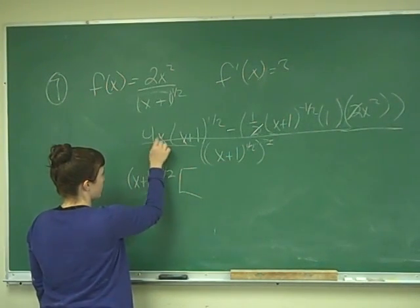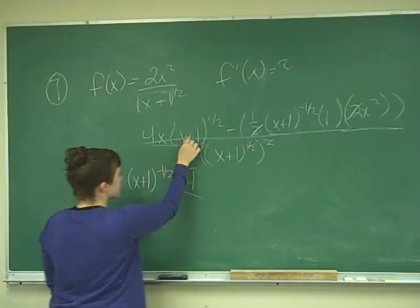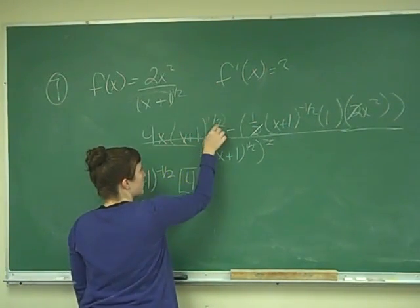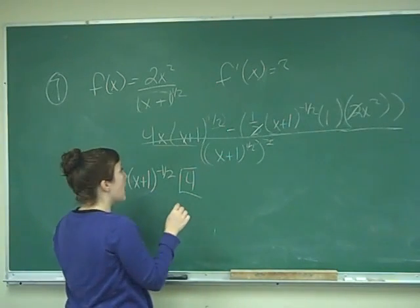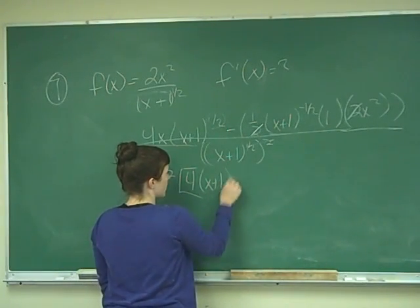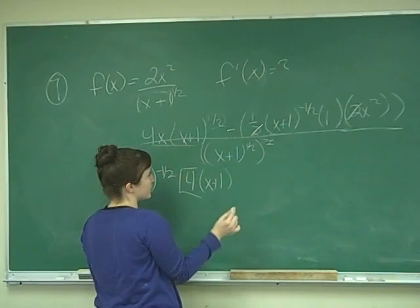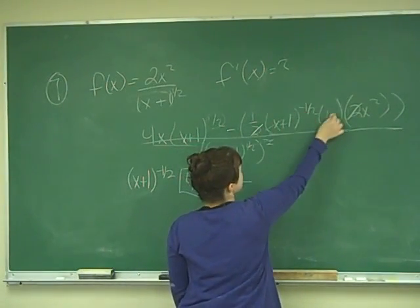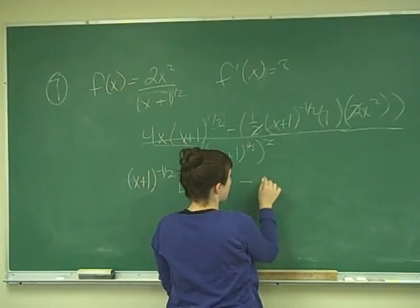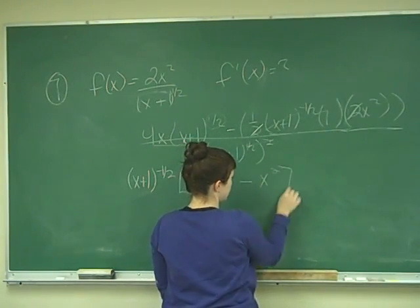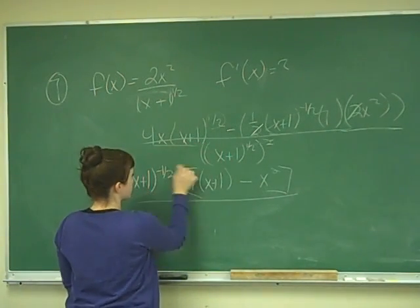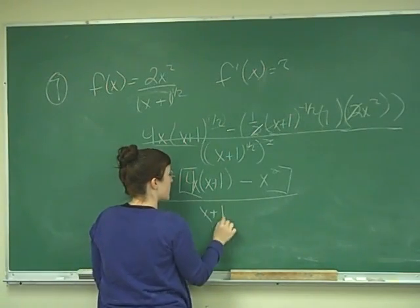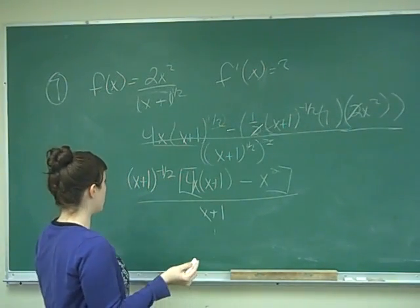And that leaves me here with 4x times, and then, because we took out a negative 1 half, that's like adding 1 half to this power. And so it's going to be x plus 1 to the 1 half plus 1 half, which is just 1, minus, we took out this, this is just 1, we simplified that. So all we have over here is x squared, all over, and so this is 4x, all over x plus 1.